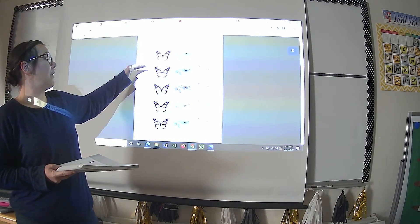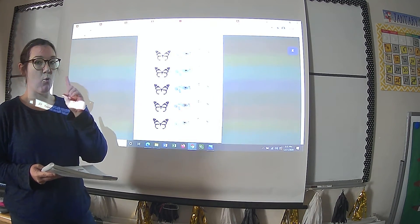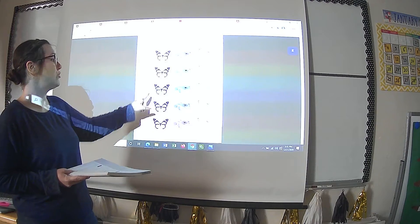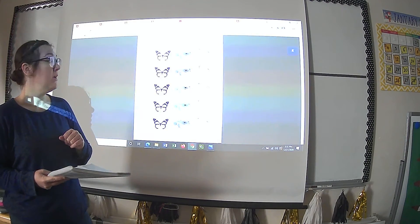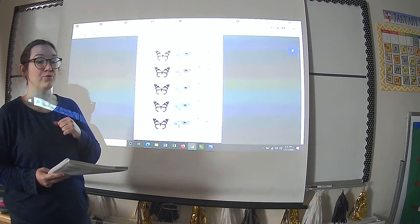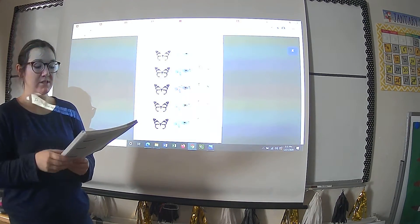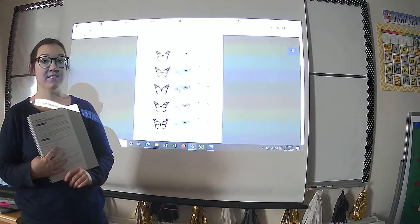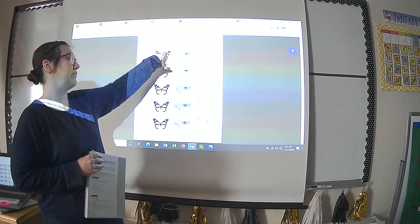For each question, the statement I give will only be true about one of these animals. So you should only have one circled on each line. Some of them will be used more than once. So I'll say more than one true statement at some point. Alright, my friends. So remember, if I say something that is true about the life cycle of a butterfly, you'll circle the butterfly.